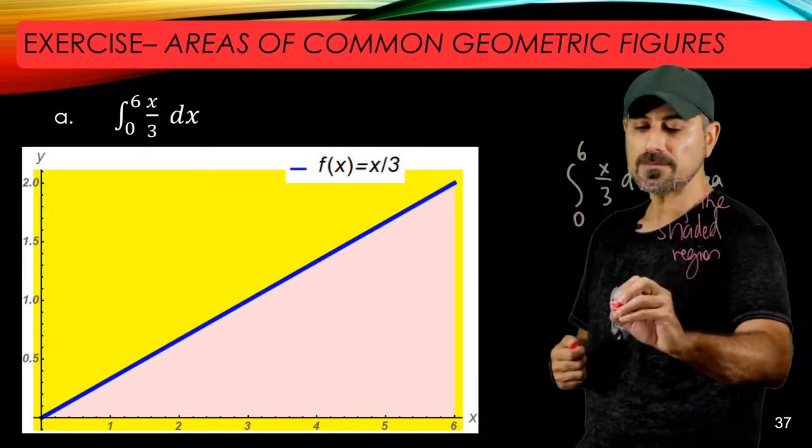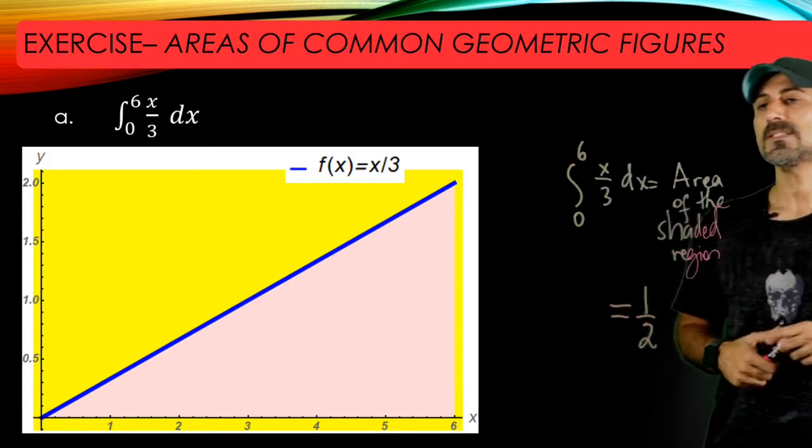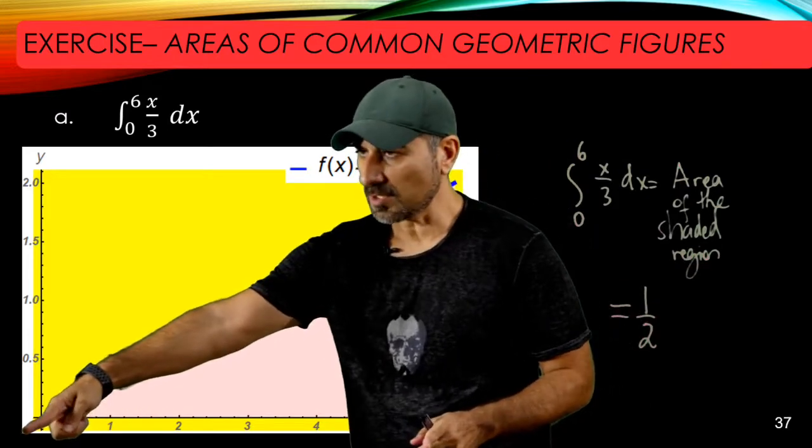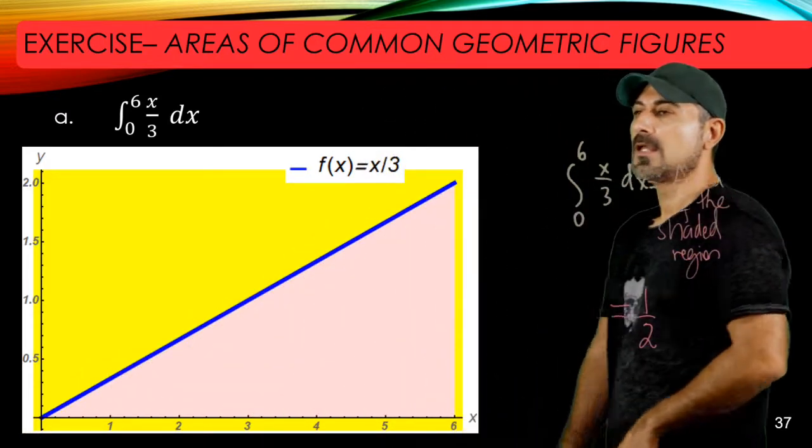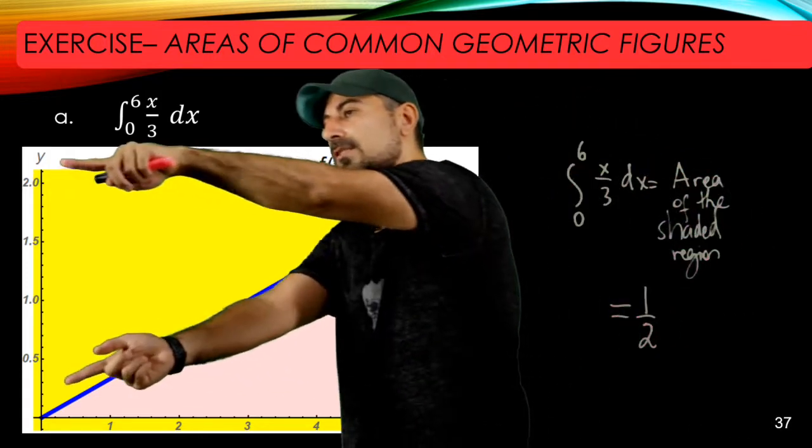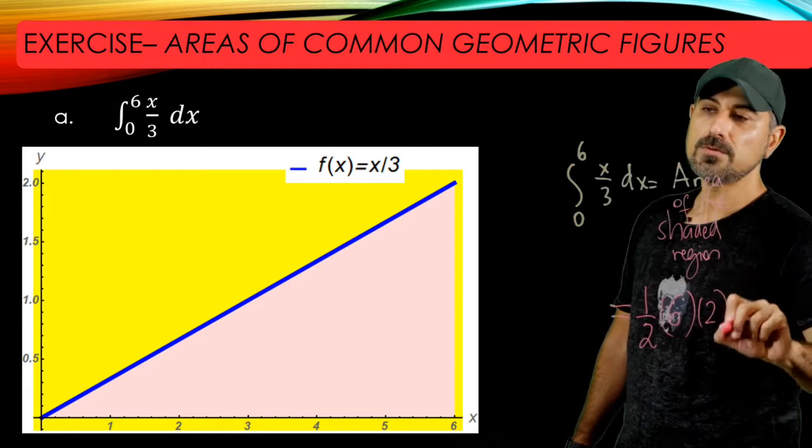All right, so what is the area of the right triangle? Because the right triangle is the shaded region. Well, it's one-half base times the height of the triangle. Here we go. So the base is of length six, and the height is of length two.